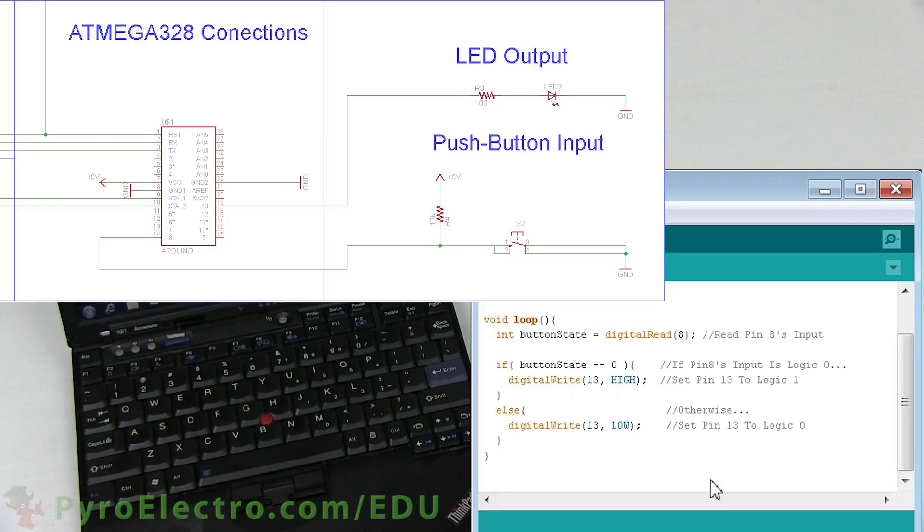in normal operation, this 10 kiloohm resistor makes pin 8 see plus 5 volt input or logic 1. Then looking at the code, when pin 8 is logic 1, the LED should be off.